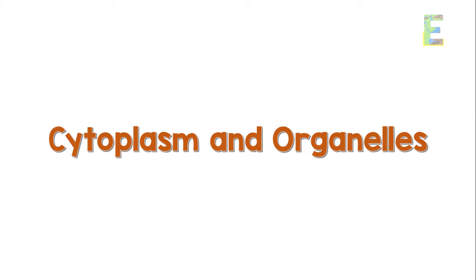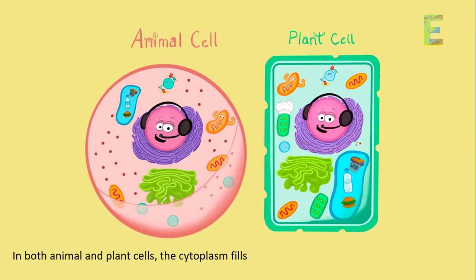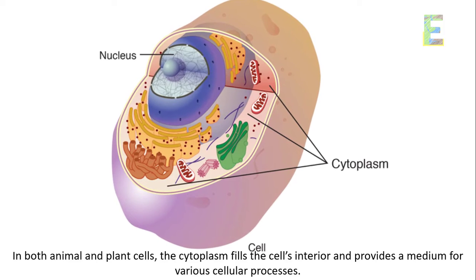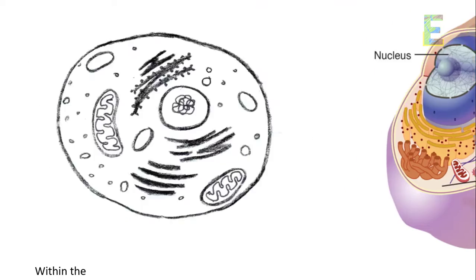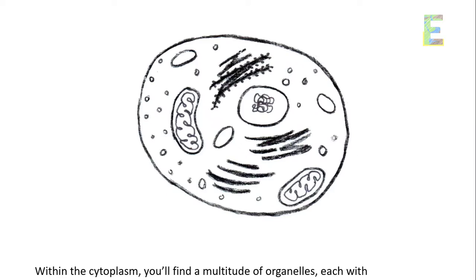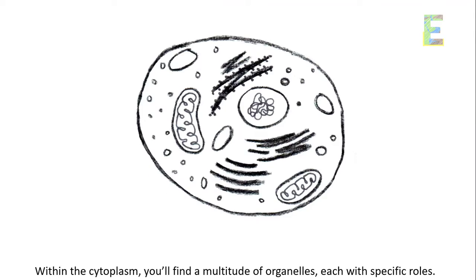Cytoplasm and organelles. In both animal and plant cells, the cytoplasm fills the cell's interior and provides a medium for various cellular processes. Within the cytoplasm, you'll find a multitude of organelles, each with specific roles.